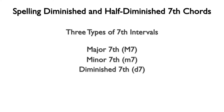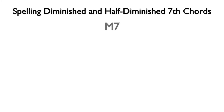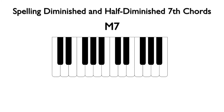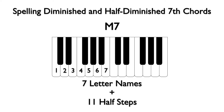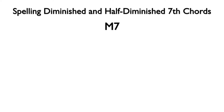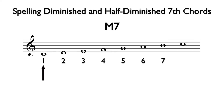There are a number of ways to find a major 7th interval. A 7th is always 7 letter names above the lower note of the interval, with a major 7th being 11 half-steps. Since counting this many half-steps can easily lead to mistakes, I recommend using one of the following methods. The first note to the 7th note of any major scale will be a major 7th interval.